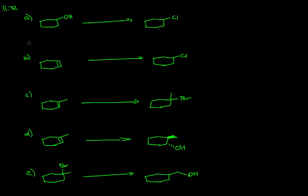The starting material for part A is a secondary alcohol. The product is a secondary chloride. This tells us that the reaction is taking place at the same carbon, so the secondary carbon is being transformed from an alcohol into a chloride.